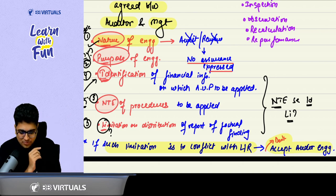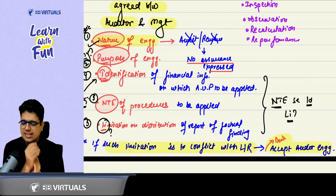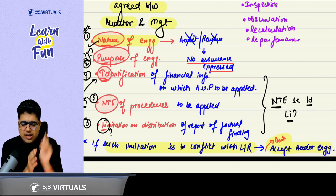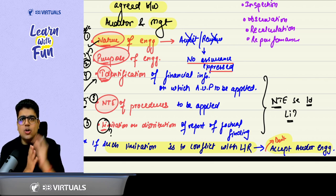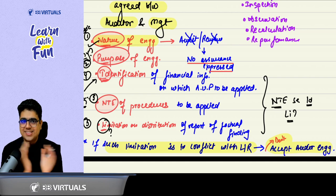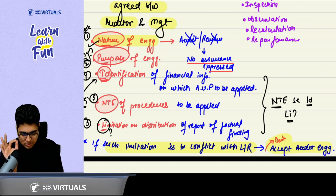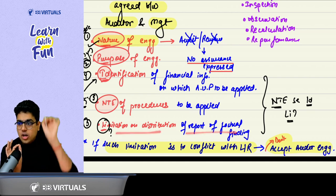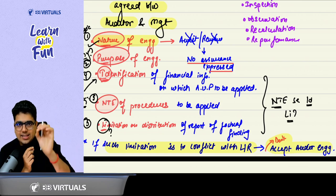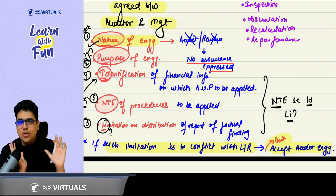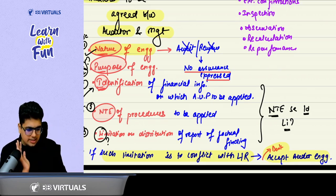Now these procedures are to be performed on which information? So identify. Identify the financial information on which agreed upon procedures are to be performed. And last point is Lee means limitation on the distribution of report. These reports are only meant for those people who have agreed the audit procedures, not for anyone else, not for the general public. So limitation on the distribution of report. Also one thing, if this limitation is in contravention with the law or regulation, then in that case, you don't accept the audit engagement.